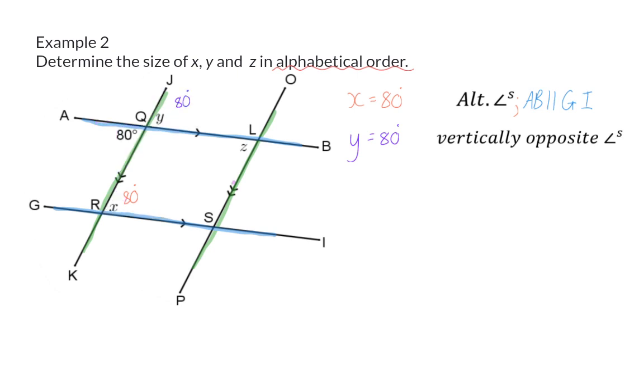Finally we need to determine the size of Z. Can you see that we can form an N with angle Y and the two lines were given as parallel which means that angle Z is the same size as angle Y which means Z is equal to 80 degrees. And again my reason in this case will be alternate angles. This time however we used the green pair of parallel lines and that will be JK parallel to OP.